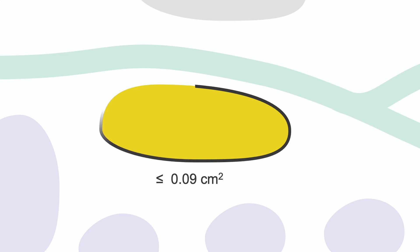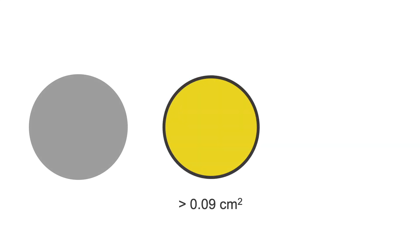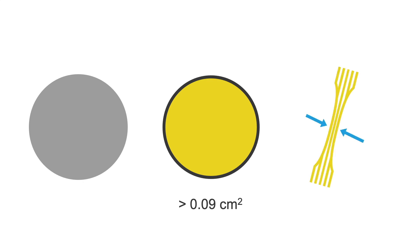Once the median nerve is localized, we measure the cross-sectional area of the nerve at the level of the pisiform. The cross-sectional area should measure equal to or less than 0.09 cm². Here we have a normal transverse image of the median nerve measured under 0.09 cm². If there is focal neuropathy of the median nerve at the wrist, we will observe a hypoechoic signal in the nerve, an enlarged cross-sectional area of greater than 0.09 cm², and physical constriction or hourglass deformity.